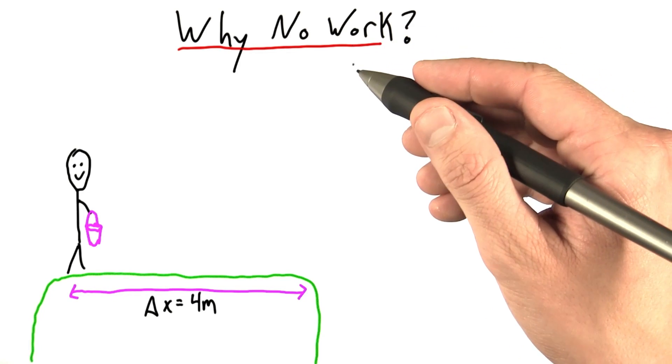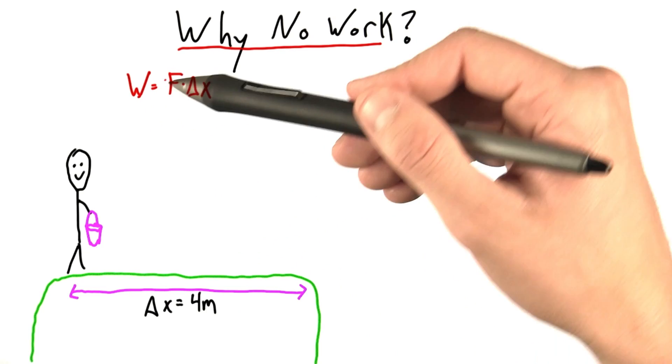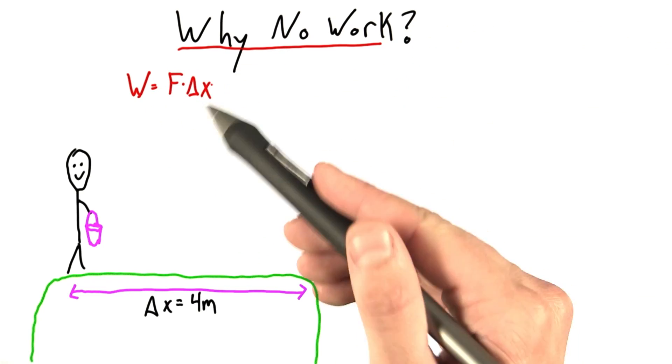So why was there no work done in the previous example? What happened? Well our definition of work says it's the product of a force and a delta x, a distance.